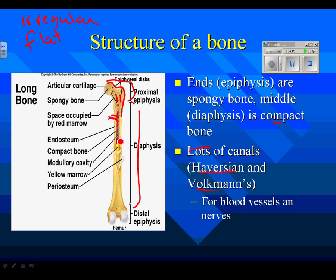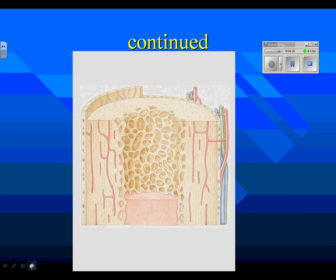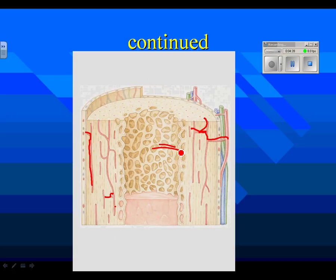Also, if bone marrow is making blood cells, there has to be a way for blood to get out, so you need blood vessels going in there. On the next slide is a very blown-up picture of the inside of compact bone with these canals running through it for blood vessels and nerves. And then just a quick view of what the inside of a bone would look like.